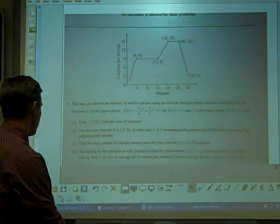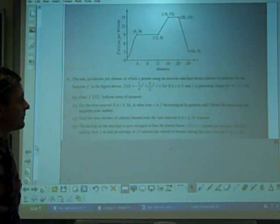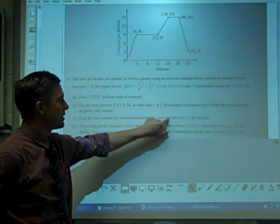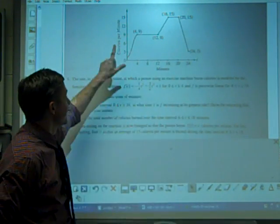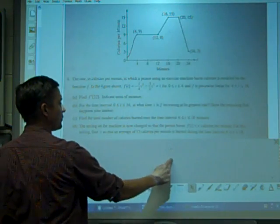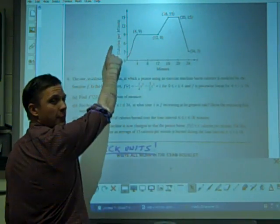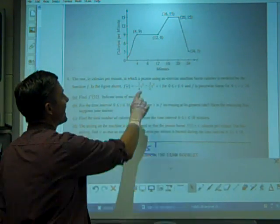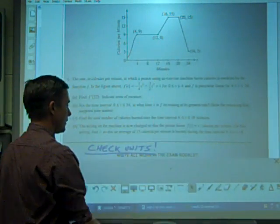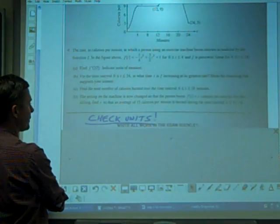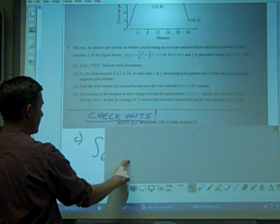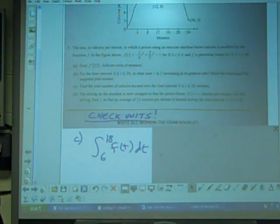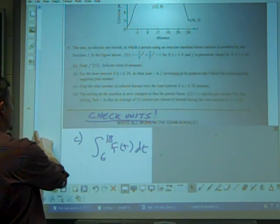Finally, two more parts. Letter C: Find the total number of calories burned over the time interval from 6 to 18. Again, my first step here is think of units. Check the units. Calories per minute times minutes. If I take calories per minute times minutes, I'll get calories. That is the area under this curve. So we definitely want to do area under the curve, which means we want to do the integral from 6 to 18 of F(T) dT.